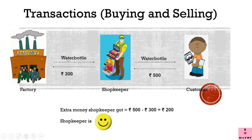One day this shopkeeper bought a water bottle from the factory and paid rupees 300 to the factory owner. He got the bottle in his shop and a customer bought this water bottle from him for rupees 500. The shopkeeper bought it for rupees 300 and got rupees 500 when he sold it. The extra money the shopkeeper got is equal to rupees 500 minus rupees 300, which equals rupees 200. So the shopkeeper is happy.